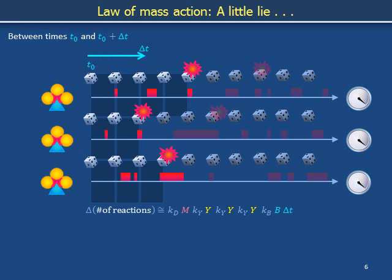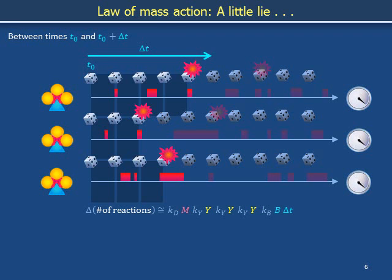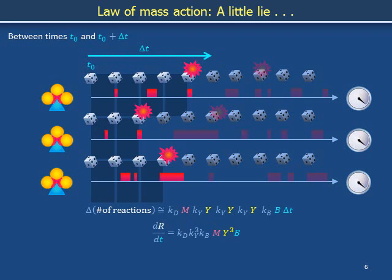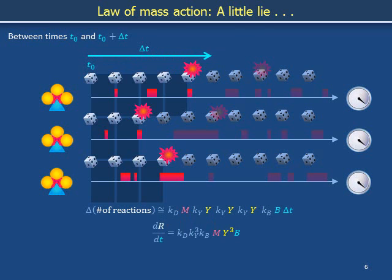Taken together, the number of reactions that proceed in a time delta t is a product of proportionality coefficients, various factors of reactant concentrations, and a factor of the time interval delta t. Capital R counts the number of reactions that have proceeded since some reference time. The rate of reactions over time is proportional to concentration M, concentration y cubed, and concentration b — all those factors multiplied together.